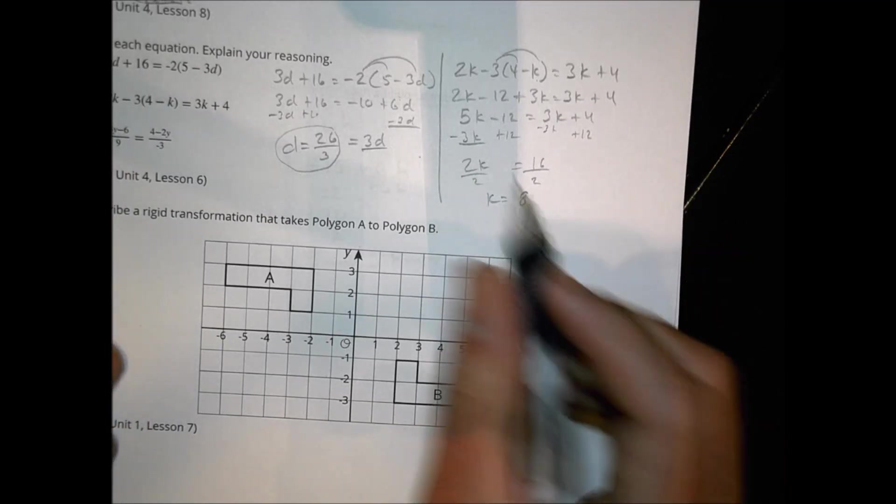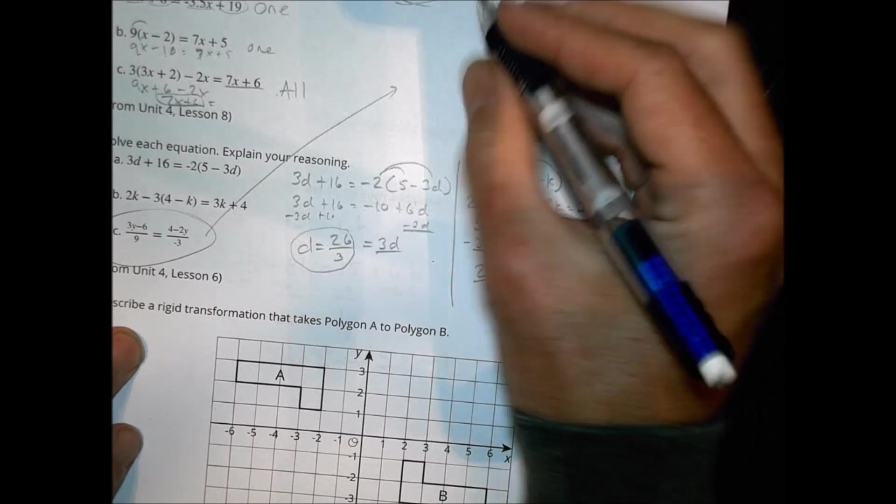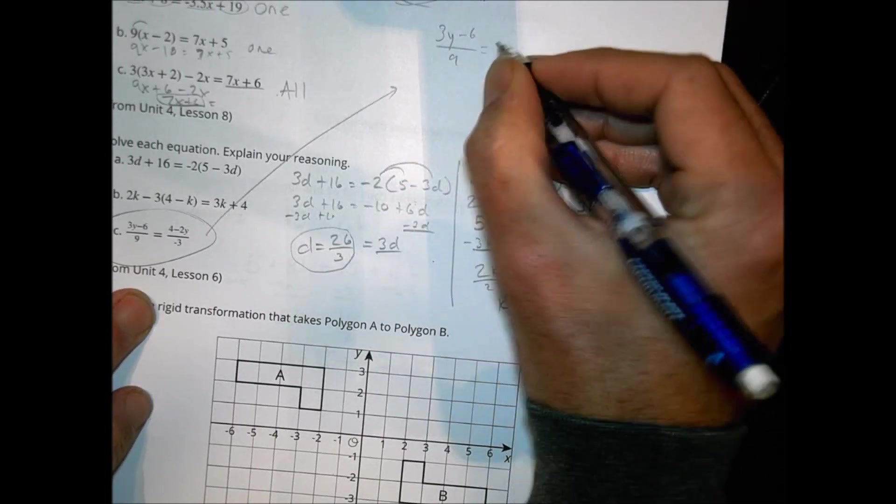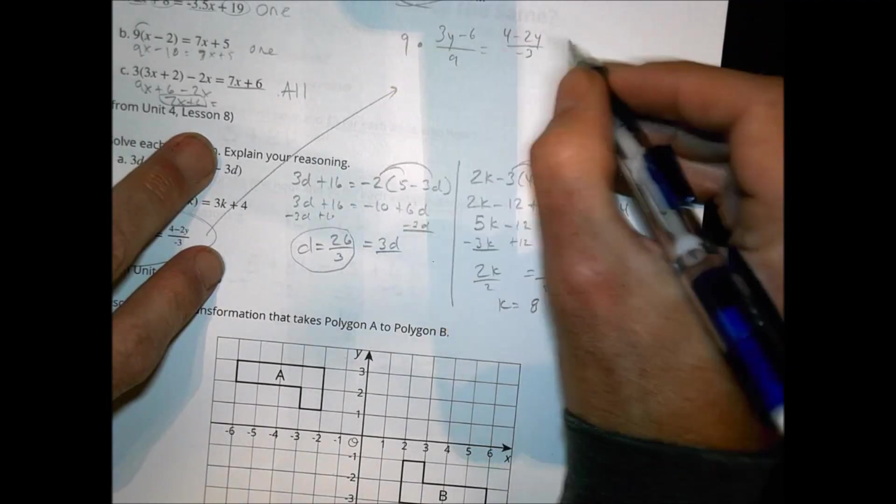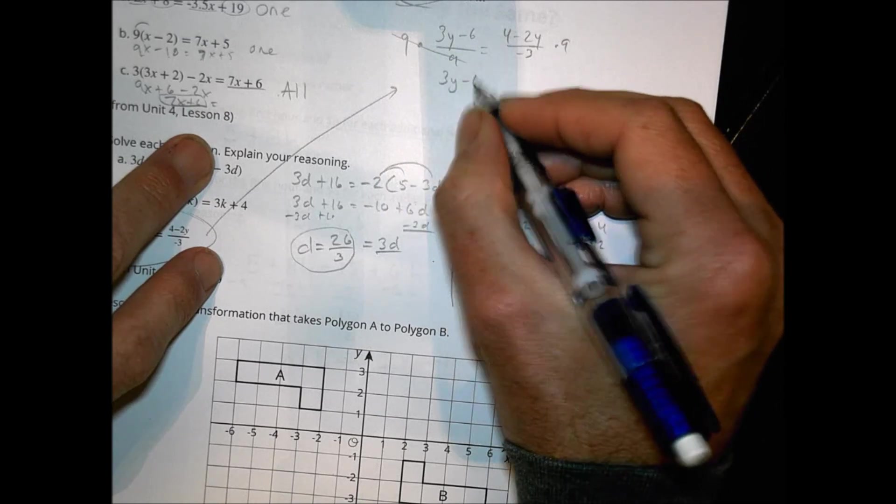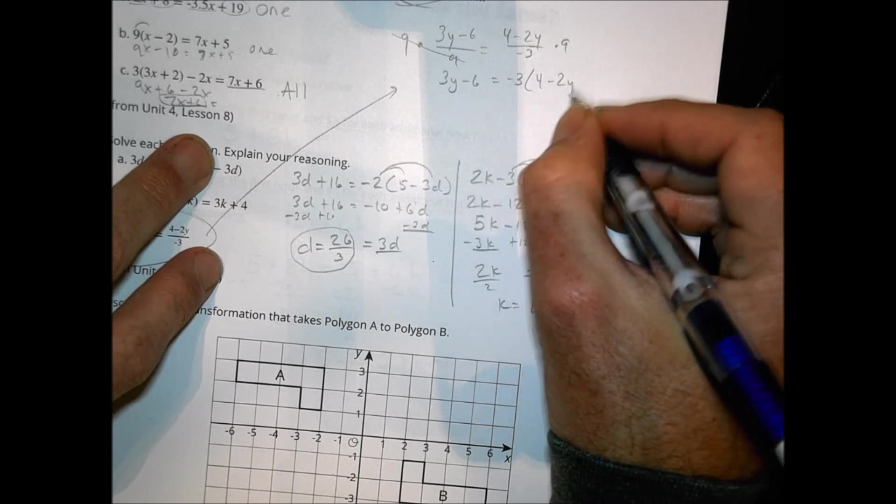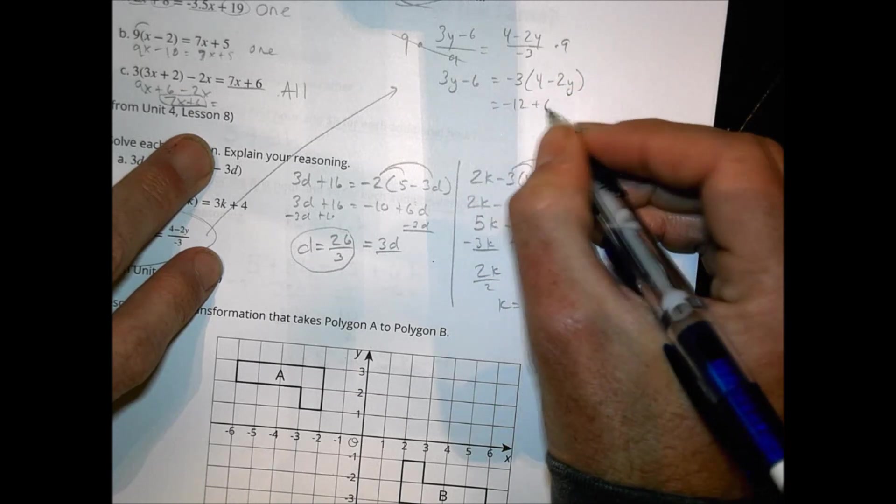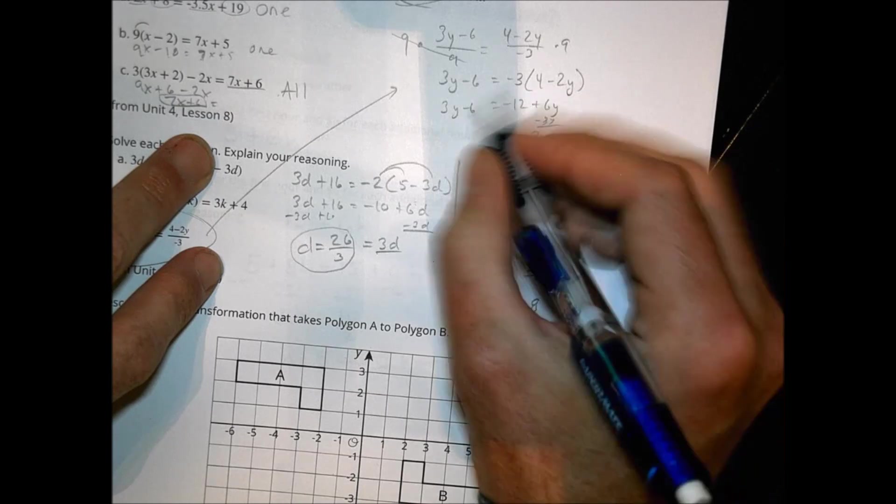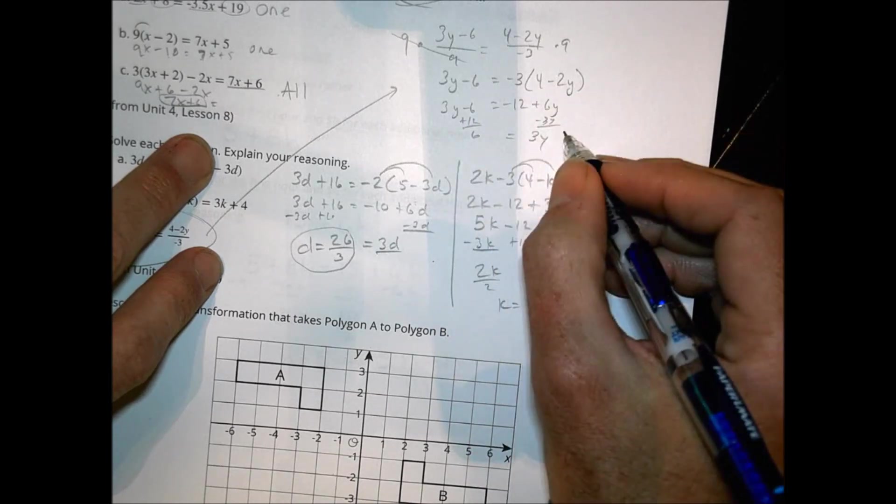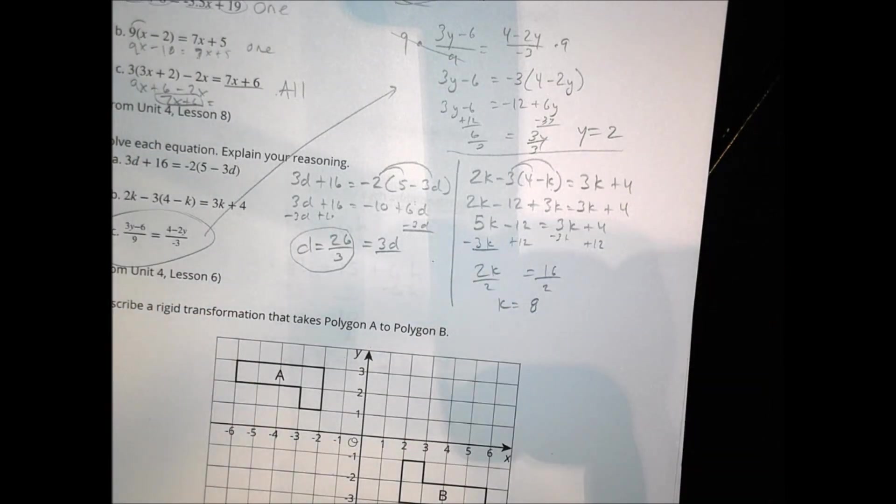And then this one right here, letter C. Don't have a lot of space. So I'm going to take letter C. I'm going to write it up here. So we have 3y minus 6 over 9 equals 4 minus 2y over minus 3. What I can do is I can multiply everything by 9, both sides by 9. That'll clear that. You get 3y minus 6. And then 9 divided by negative 3 is negative 3 times 4 minus 2y. We'll distribute. We have negative 12 plus 6y equals 3y minus 6. And we can subtract 3y. And we have 3y left over here. We can add 12 over there. So left with 6. So 3y equals 6. Divide by 3. And y equals 2. So a little bit quick there, I know. But that becomes your solution for number 6c.